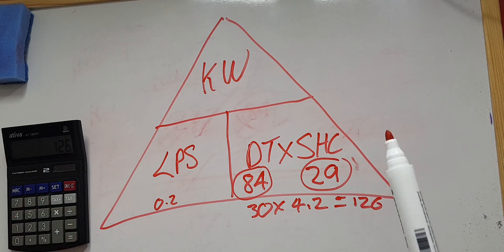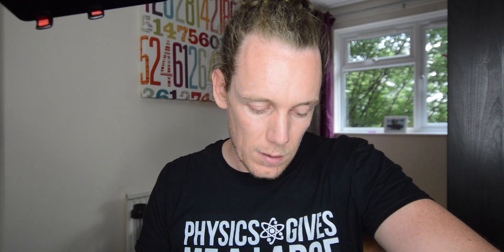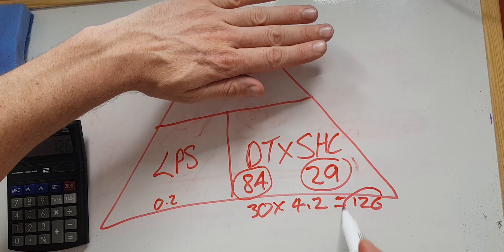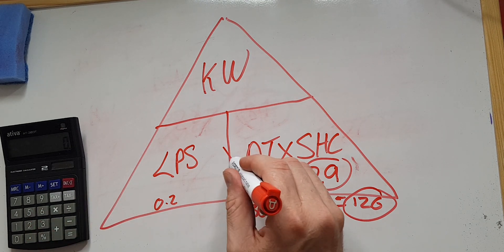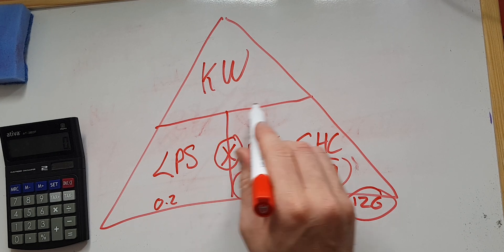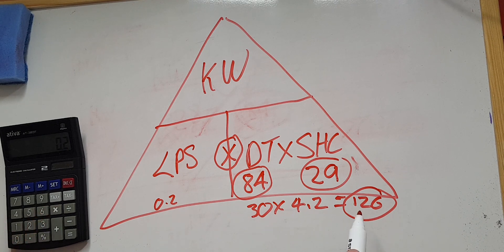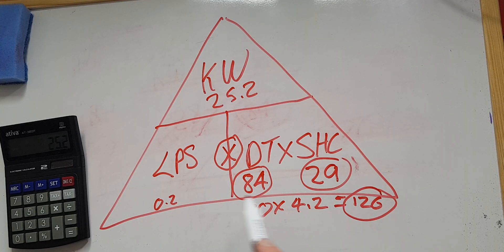So whatever you're trying to find out, you cover it up on this triangle. We're trying to find out the kilowatts in, so we're left with 0.2 liters per second at a 30 degree rise times specific heat capacity. So 0.2 times 126 equals 25.2. We would need the output to be 25.2 kilowatts in order to achieve 0.2 liters per second at a 30 degree rise.